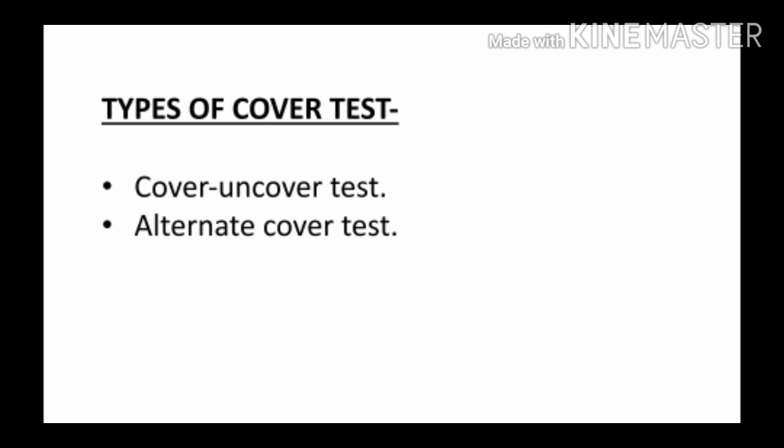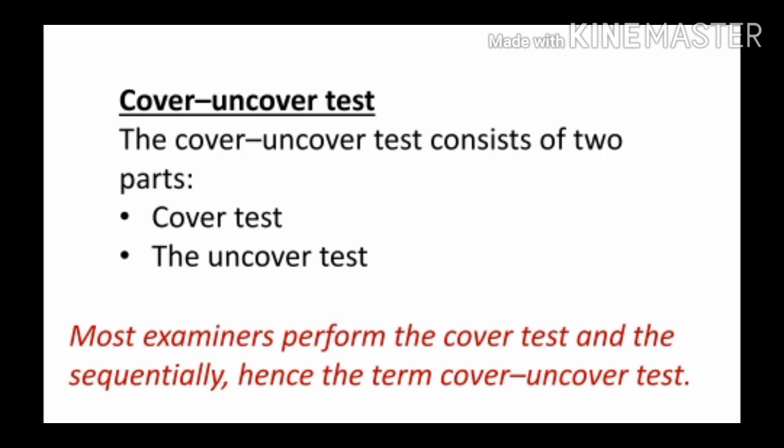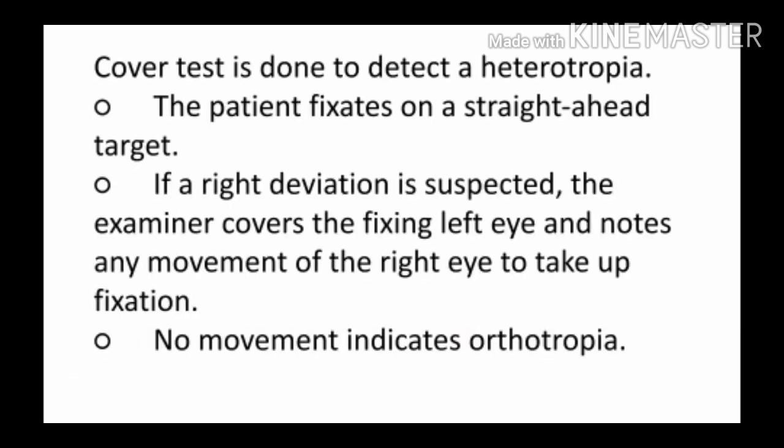The cover test is of two types. First is the cover-uncover test, also known as the unilateral cover test. Second is the alternate cover test. The cover-uncover test consists of two parts: the cover test and the uncover test. Most of the time the examiner performs them sequentially, one after the other, which is why it is also called the cover-uncover test.